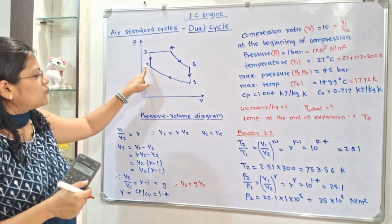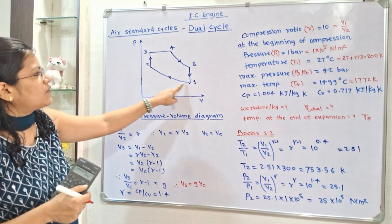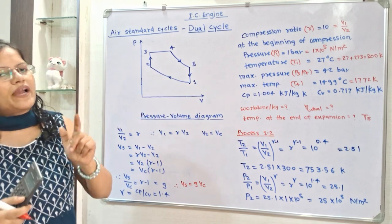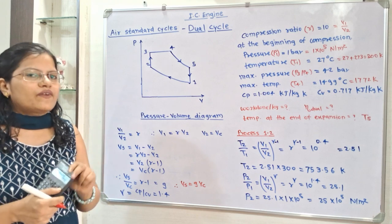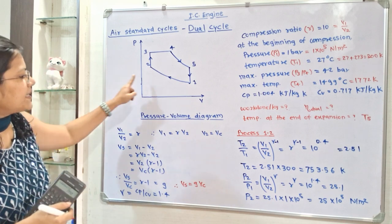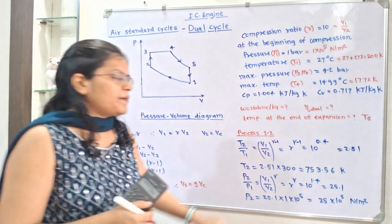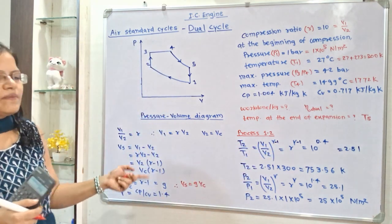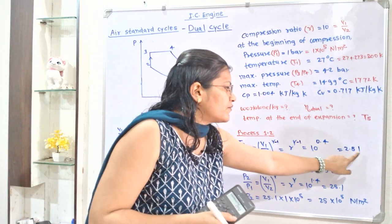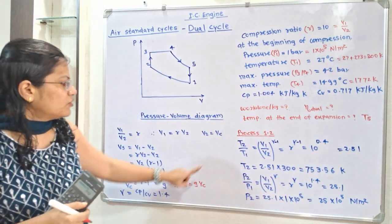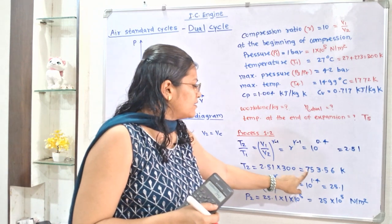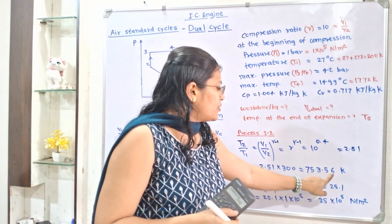For process 1 to 2, T1 and P1 are known but T2 and P2 are not given. Using the isentropic relation: T2/T1 = (V1/V2)^(γ−1) = R^(γ−1) = 10^0.4 = 2.51. Therefore T2 = 2.51 × 300 = 753.56 K.